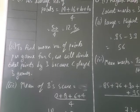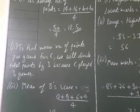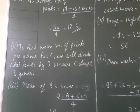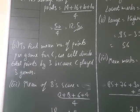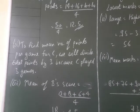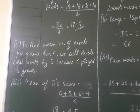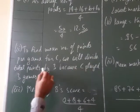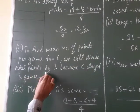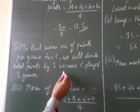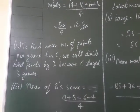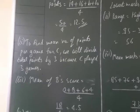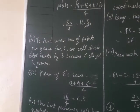Second part: find the mean number of points per game for player C — would you divide total points by 3 or by 4 and why? We divide by 3 because C has played only 3 games. From the table, in game 3 she did not play, so we do not count that game.